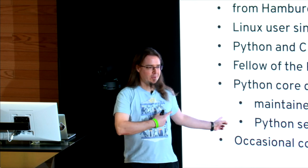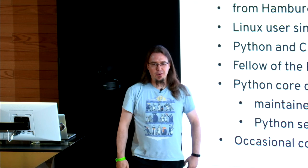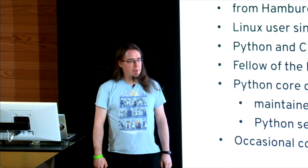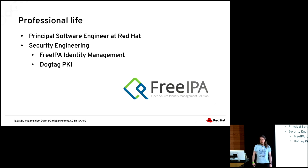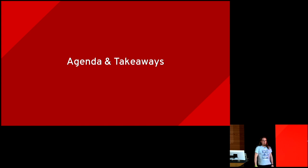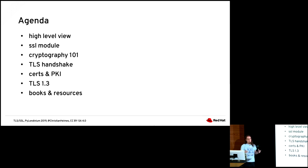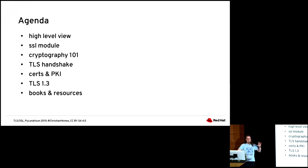I've been using Python for a while. I usually use the widescreen because of low contrast, but these displays are amazing. As a core developer since October 2007, I've been maintaining mostly security-related stuff in Python. I'm also employed by Red Hat, working on a software suite called FreeIPA, which is identity management, a bit like Active Directory. This talk is about TLS/SSL. The agenda covers: a high-level view of HTTPS, a quick introduction to the SSL model, a three-minute Crypto 101, TLS handshake, certificates and public key infrastructure, a preview of TLS 1.3, and some books and resources at the end. This is three hours of material condensed into a 45-minute talk, shrunk down to hopefully 25 minutes, so I need to rush a bit.